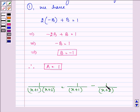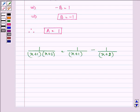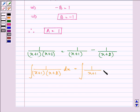Therefore, integrating both sides, we get integral of 1 over x plus 1 into x plus 2 dx is equal to integral of 1 over x plus 1 minus 1 over x plus 2 dx.